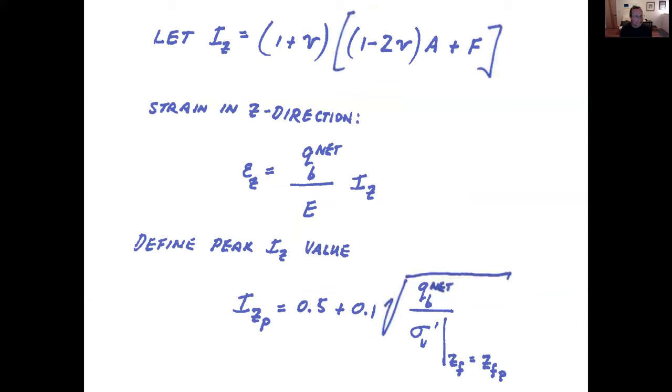Let's let IZ equal one plus Poisson's ratio times the quantity one minus two times Poisson's ratio A plus F, and we can see that the strain in the z direction looks something like this. And we can define a peak IZ value. That would be IZ at the peak, at the point of that graph on the last slide. And this has a numerical value 0.5 plus 0.1 times the quotient qb net over sigma v prime at depth below foundation equals zfp. Zf at the peak is what this is identifying.